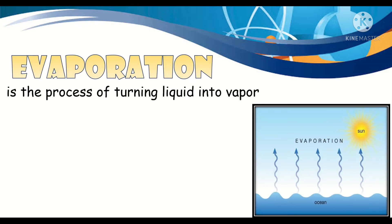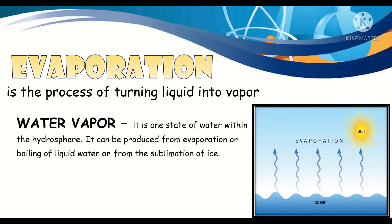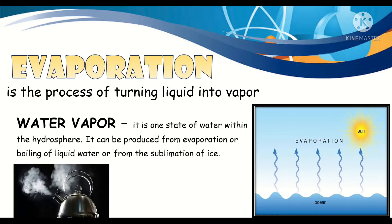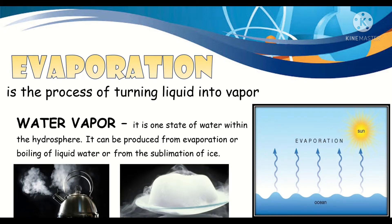Let's have first the evaporation. Evaporation is the process of turning liquid into vapor. What is water vapor? Well, water vapor is one state of water within the hydrosphere that can be produced from evaporation or boiling of liquid water, or from the sublimation of ice.